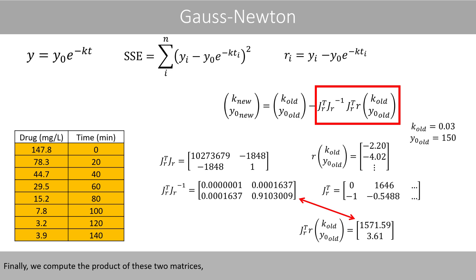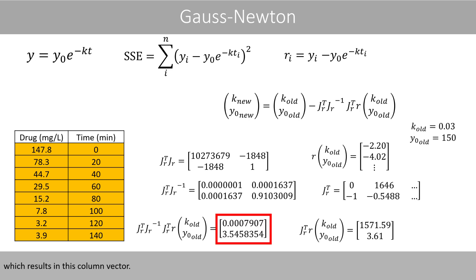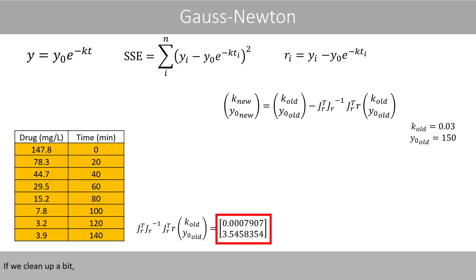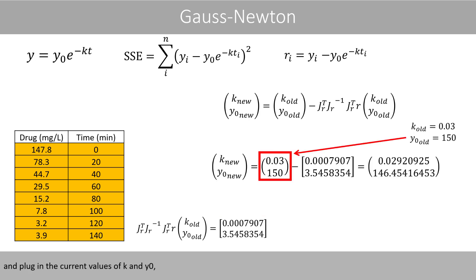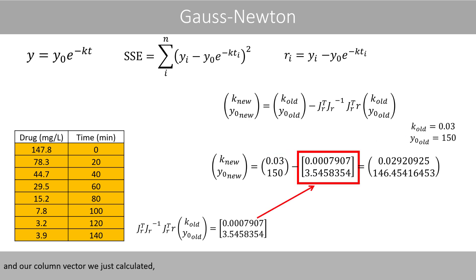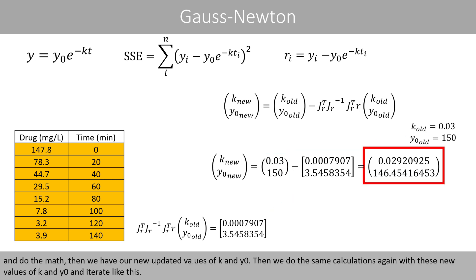Finally, we compute the product of the inverse matrix and the Jacobian-residual vector, which gives us a column vector. Plugging in the current values of k and y0 and doing the math, we obtain our new updated values of k and y0. We then repeat the same calculations with these new values and iterate.